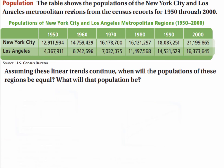The table shows the population of the New York City and Los Angeles metropolitan regions from the census reports from 1950 to 2000. We start in 1950 and go up to 2000, and here are our populations. Assume linear trends continue — when will the populations of the regions be equal, and what will the populations be?